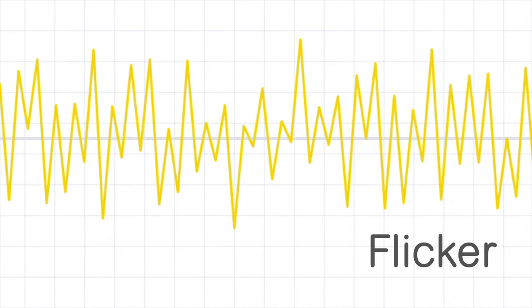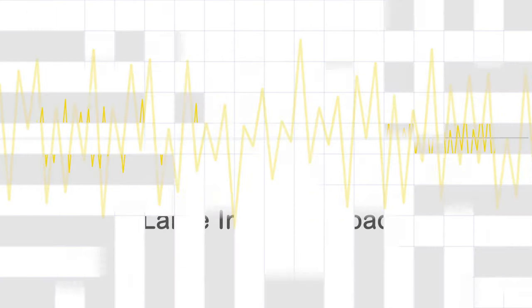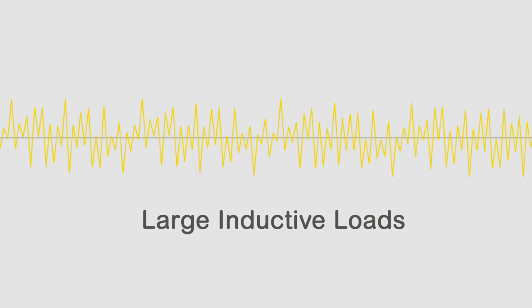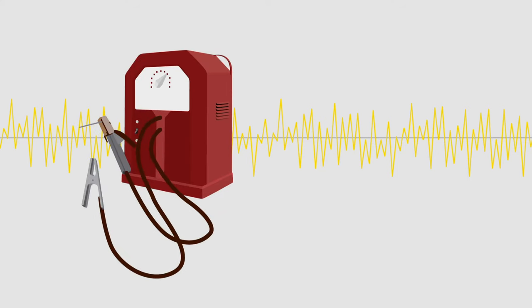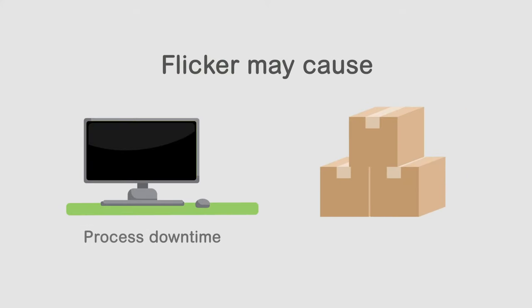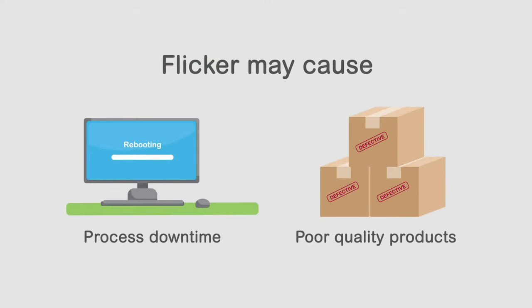Flicker level is discovered by using the short-term flicker coefficient or PST. Flicker is caused by a series of voltage fluctuations and depends on both the magnitude of the fluctuation and the frequency of the fluctuation. Flicker is normally caused by large inductive loads. When a welder strikes an arc or an inductive load starts they demand large amounts of inductive reactive power. That makes the voltage sag repeatedly within milliseconds or seconds. Flicker may cause process downtime or generate poor quality products.